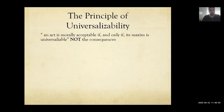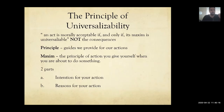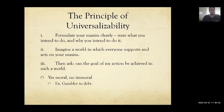The principle of universalizability says act only on universalizable maxims. A maxim is a principle you give yourself to live by, and it has two parts: your intentions and your reasons. Only you know your real intentions and the reasons why you did it, so you're responsible for those two things. There are three steps to test your maxim. First, formulate it clearly — state what you intend to do and why. Second, imagine a world where everybody supports and acts on your maxim. Third, ask yourself: if everybody did the same thing for the same reasons with the same intentions, can the goal of your action be possible? If you run into a contradiction, it's wrong.